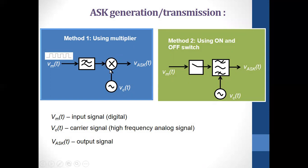Looking at the ASK transmitter or generator: the modulating signal Bm (the line code) comes in, unwanted components are filtered out, then an oscillator produces the carrier Vc(t), which is multiplied with the signal to produce the ASK modulated output. This can also be implemented using an on-off switch: when on, the modulated carrier passes through; when off, nothing passes. The carrier is always present, and the switch turns on and off based on the input signal.